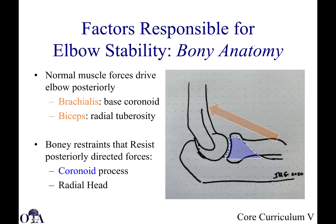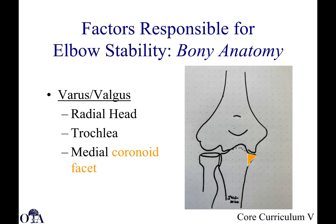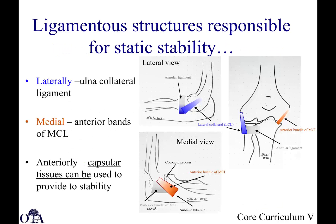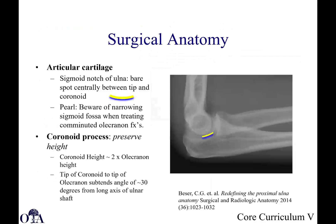These muscle forces also help to provide stability, as shown by the colored arrows correlating with the illustrations. Varus and valgus stability also has bony restraints: the radial head, the trochlea, and the medial coronoid facet. There are also ligamentous structures responsible for static stability. On the lateral side, you have the lateral ulnar collateral ligament. Medially, you have the anterior band of the MCL. Anteriorly, capsular tissues also provide stability.